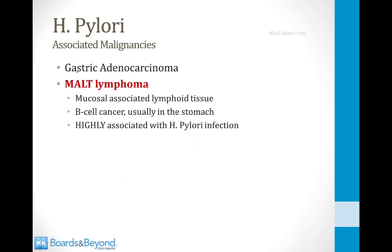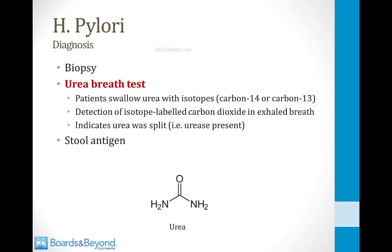There are two malignancies associated with H. pylori infection of the stomach. The first is gastric adenocarcinoma. The second is a rare B-cell cancer called MALT lymphoma — mucosal associated lymphoid tissue — which usually occurs in the stomach and is highly associated with H. pylori infection. One way to diagnose H. pylori is to perform a biopsy of the stomach lining via endoscopy.